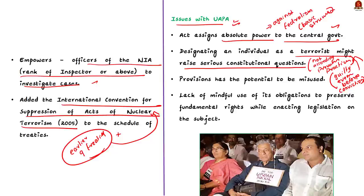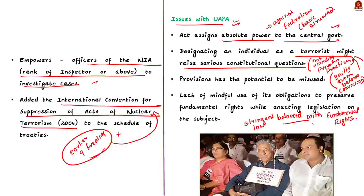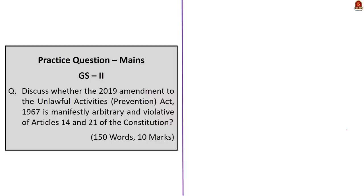The final issue: all citizens hate terrorism, so we all want a stringent law that helps in preventing terrorism. But at the same time, the government must be mindful that it does not impinge upon the fundamental rights of citizens, because in a democratic country, fundamental rights are very important. While taking stringent action against terrorism by enacting strict laws, the government must ensure that fundamental rights are not breached. In this discussion, we saw the purpose of UAPA, the major amendments brought about by the 2019 amendment, and the issues with the 2019 amendment.